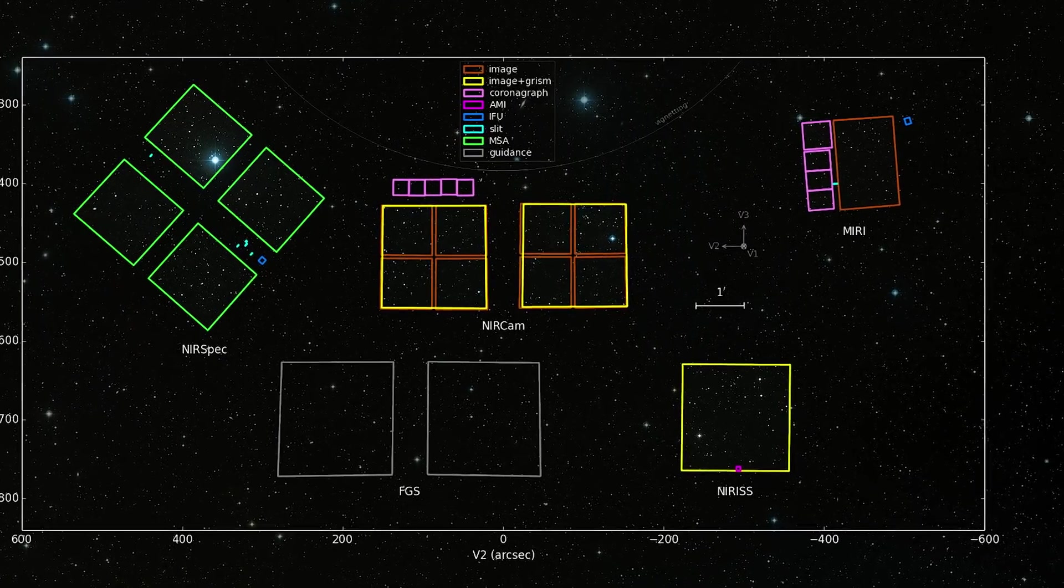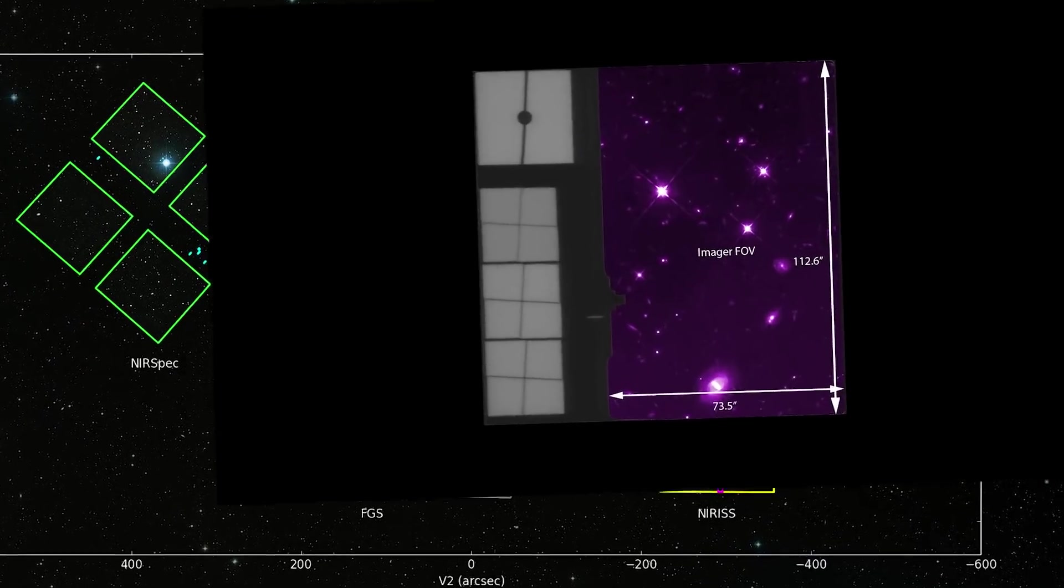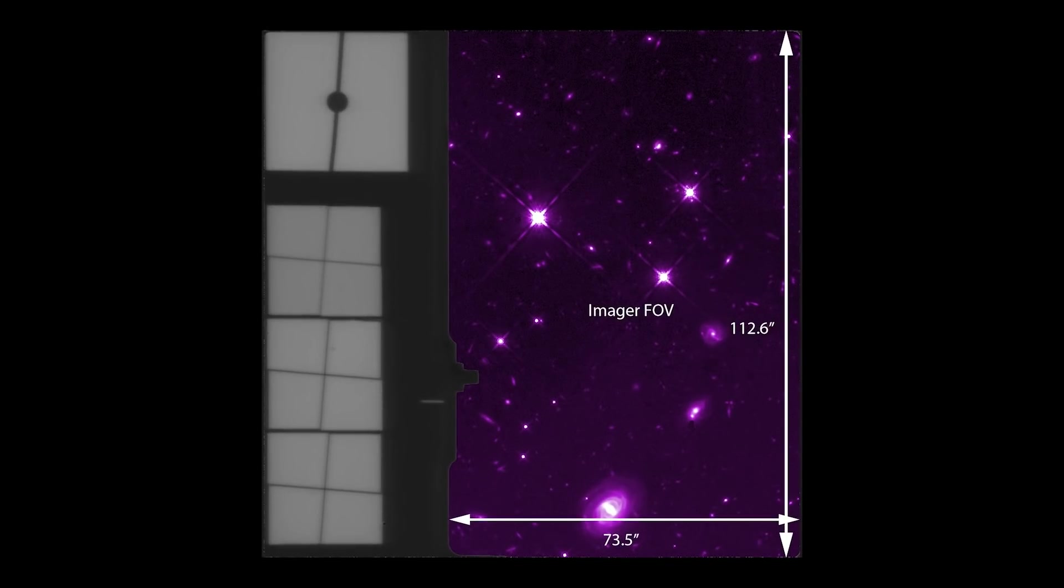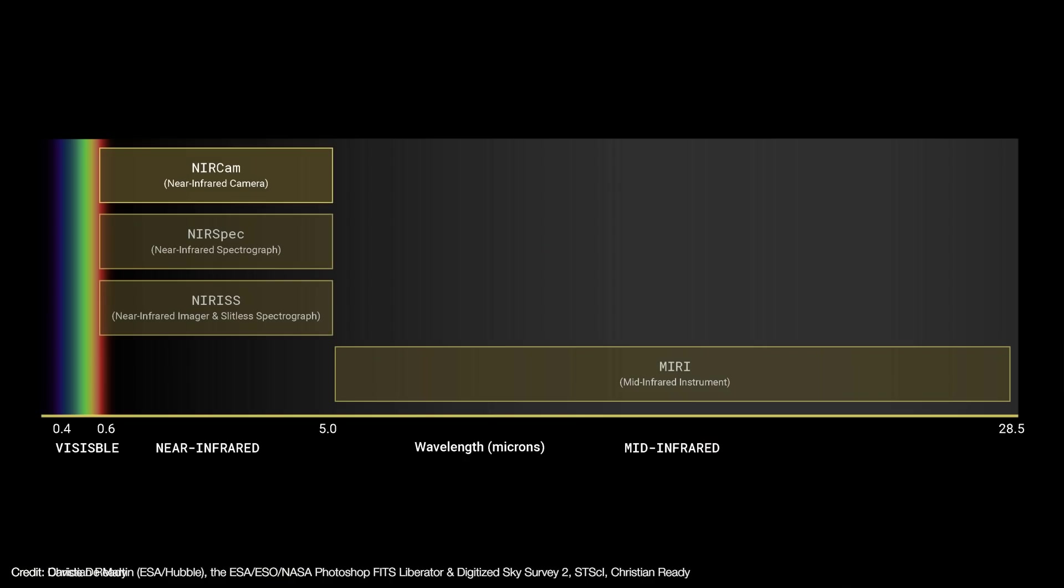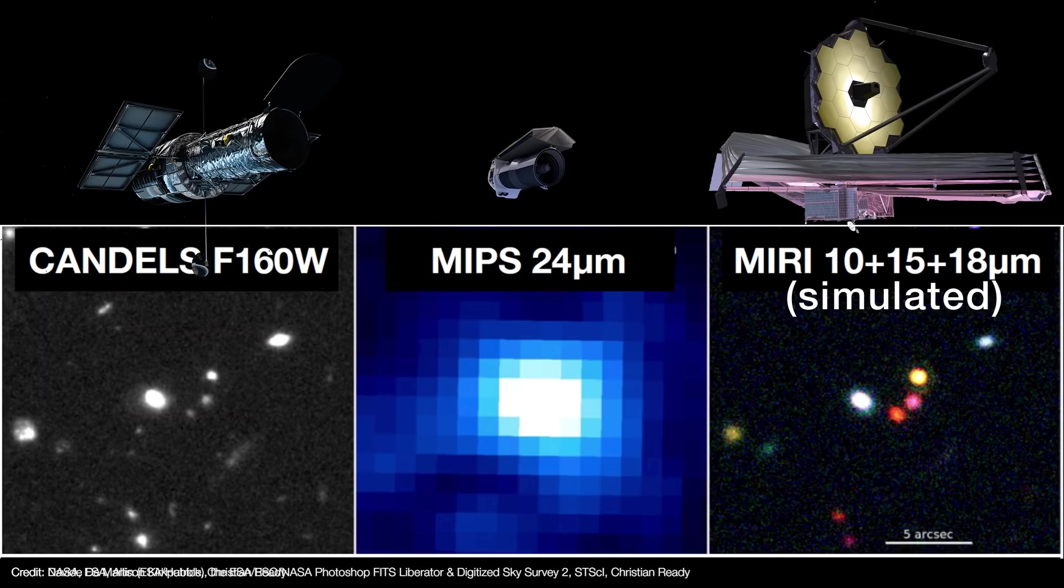MIRI's imaging field of view takes up the largest section of its focal plane. It gets a resolution of about 0.11 arc seconds per pixel. Now that's about half of NIRCam and NIRISS's resolution. But we have to remember that the longer the wavelength, the lower the resolution gets. Still, with a six and a half meter primary mirror, MIRI achieves a much sharper resolution than Spitzer ever could.